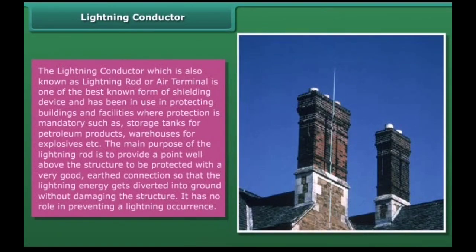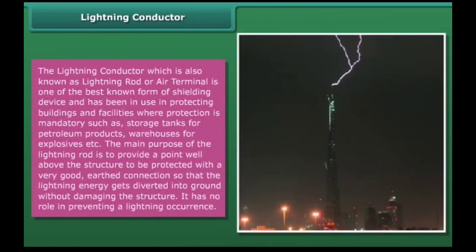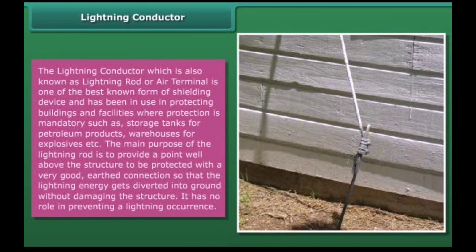Lightning conductor. The lightning conductor, which is also known as lightning rod or air terminal, is one of the best known forms of shielding device and has been in use in protecting buildings and facilities where protection is mandatory, such as storage tanks for petroleum products, warehouses for explosives, etc. The main purpose of the lightning rod is to provide a point well above the structure to be protected with a very good earth connection, so that the lightning energy gets diverted into ground without damaging the structure. It has no role in preventing a lightning occurrence.